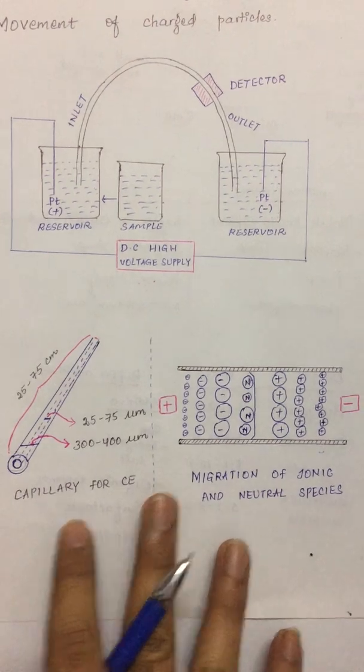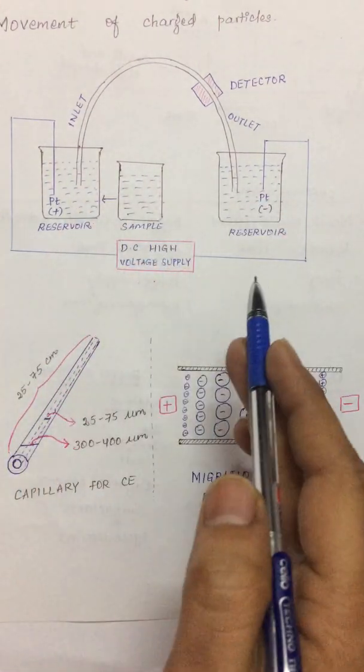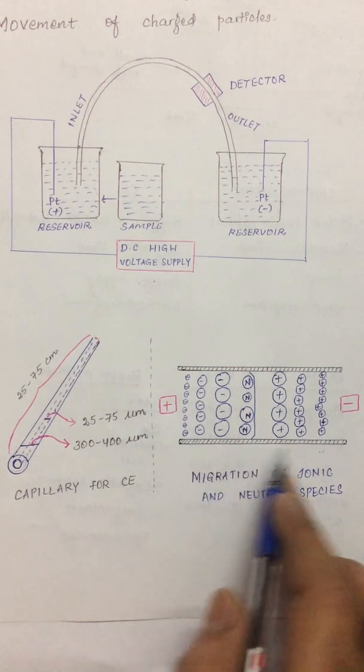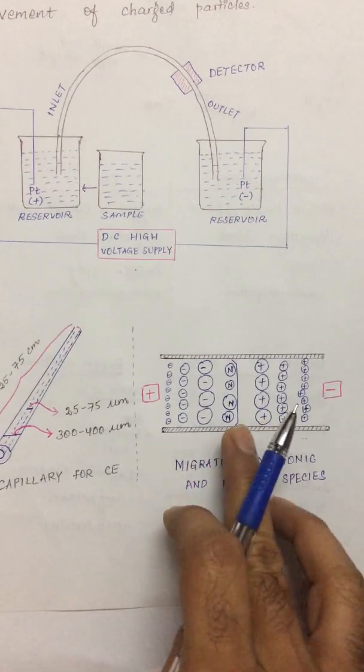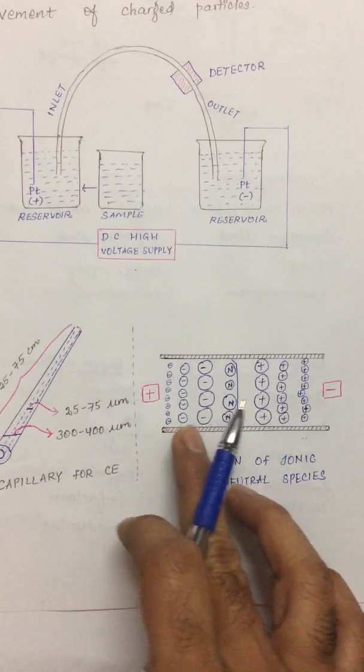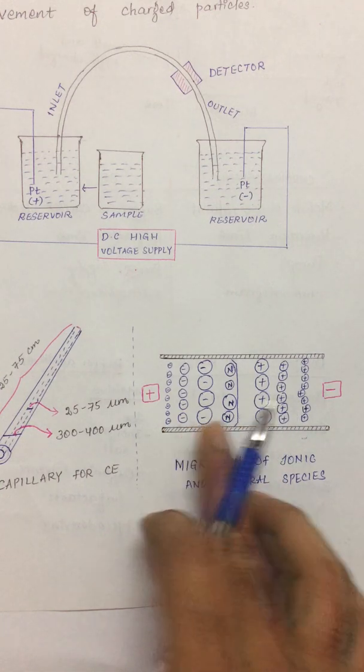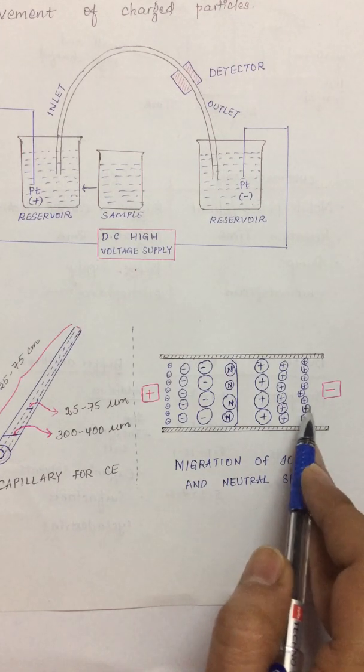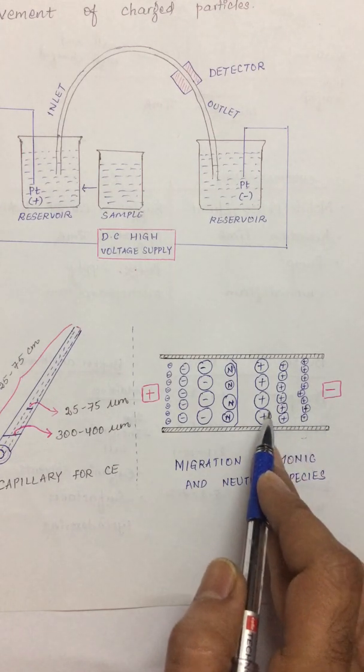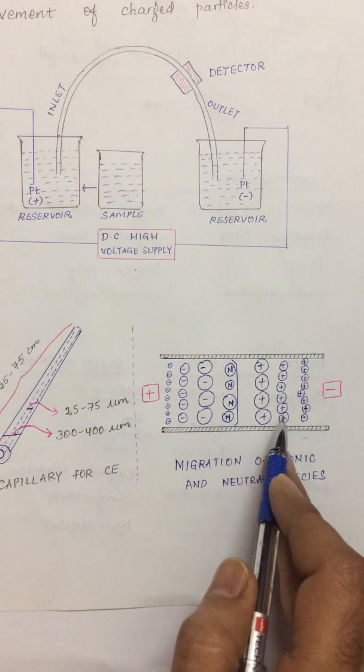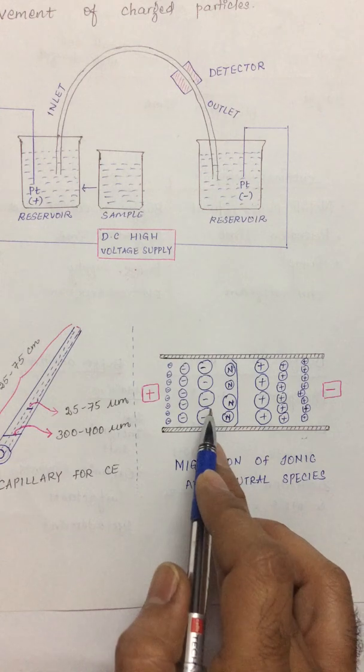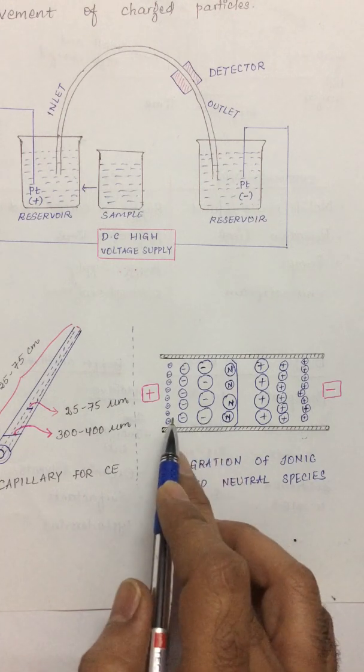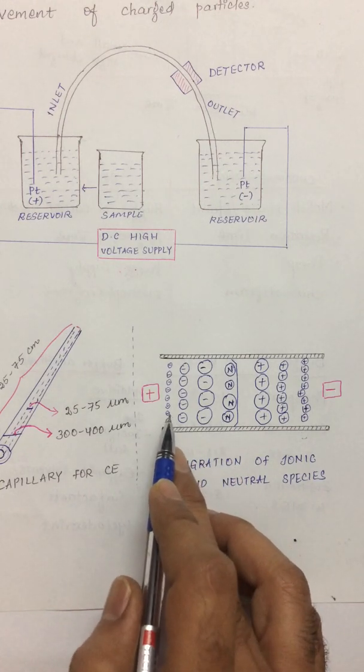How does the analyte get separated? If this is the capillary we can see the analyte ions and the neutral species are slowly moving. The movement will be towards cathode. The cations are coming closer to the cathode. The smaller ones are much closer, the larger ones are farther. Neutral ones usually come after the cations and the anions which are attracted towards the anode come at the later stages. The smallest anions will be the last coming analyte.